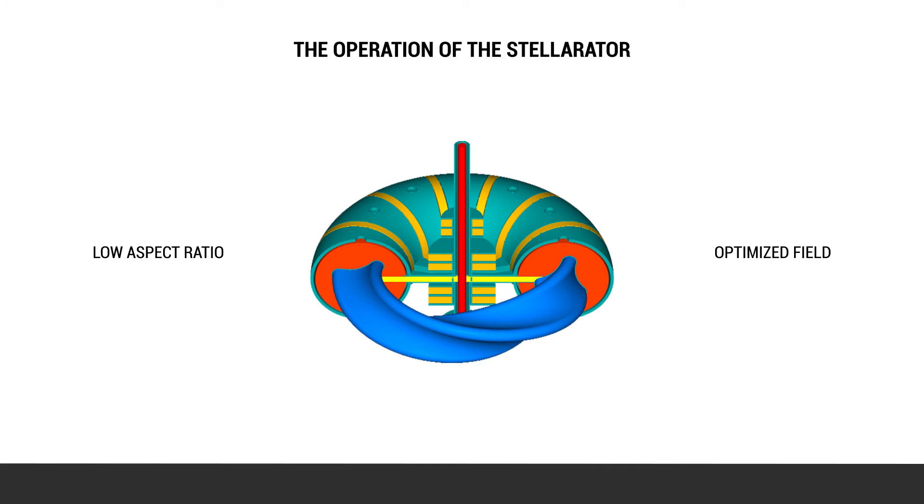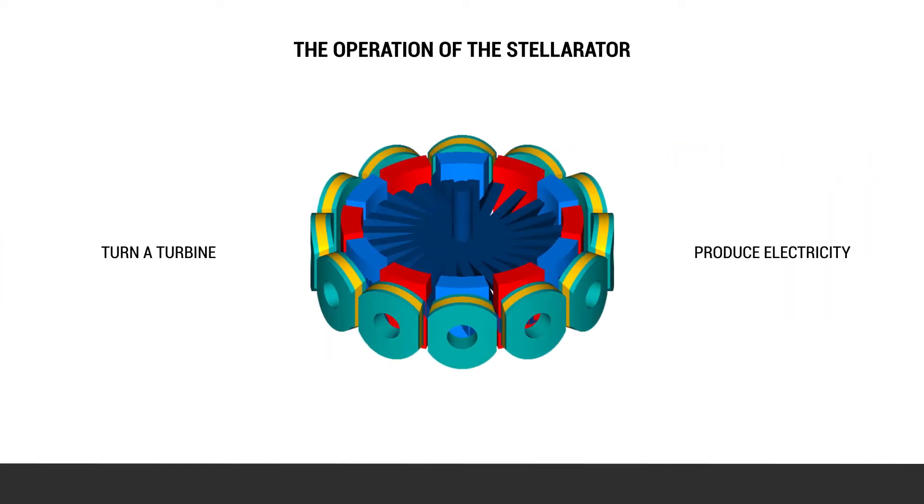Our design uses an optimized magnetic field configuration to confine a stable, steady-state plasma. The compact stellarator produces electricity by turning water into steam, then using steam to turn a turbine to produce electricity.